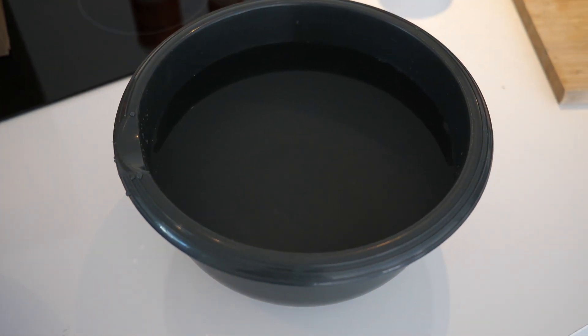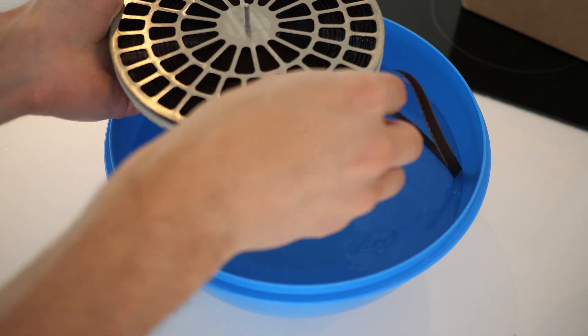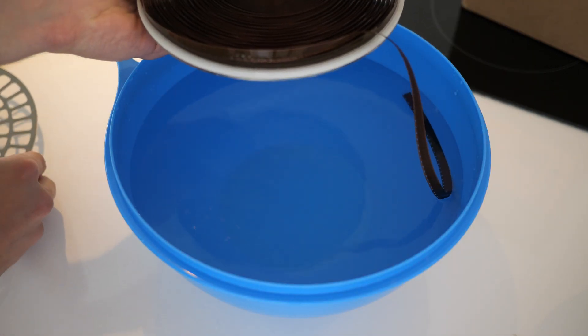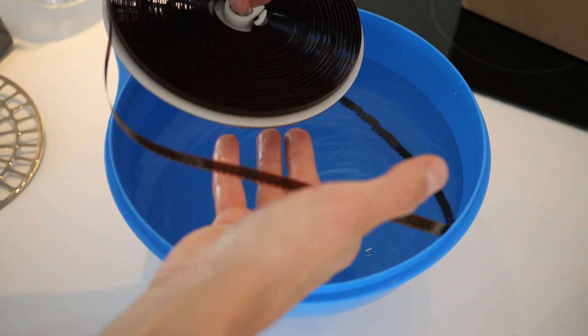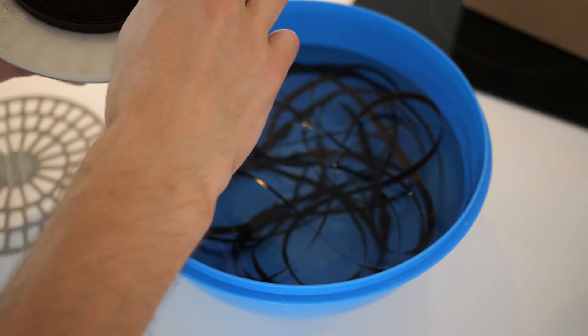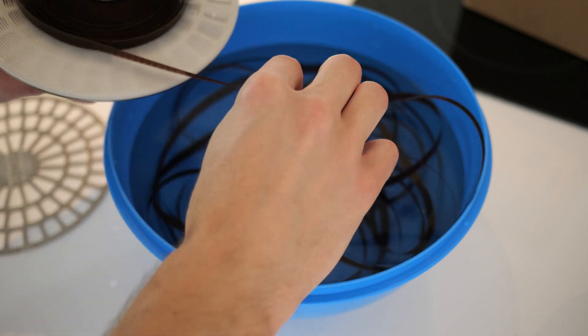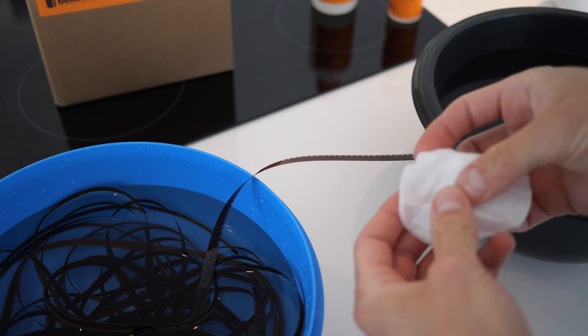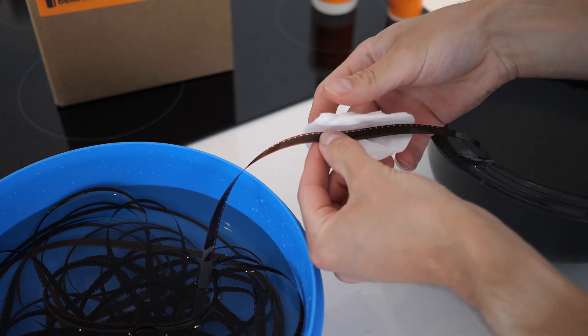We will now remove the ramjet from the film. Remember, that most of the ramjet was already removed during the first rinse after the pre-bath, but a small amount still sticks to the film. In order to remove it, we first put all of the film in a big bowl of water. Then, the film is pulled through a wet cotton pad. You can also use a sponge for this purpose.